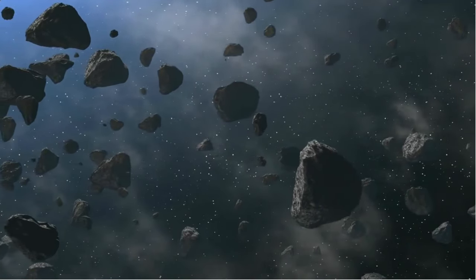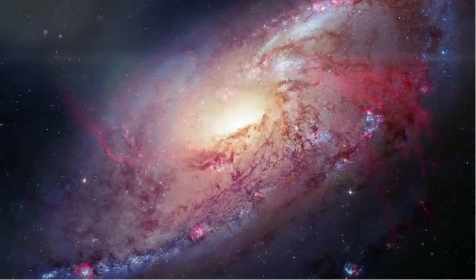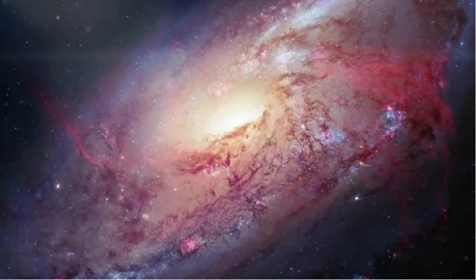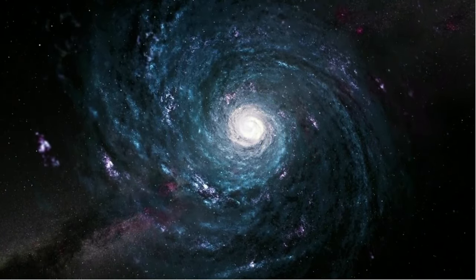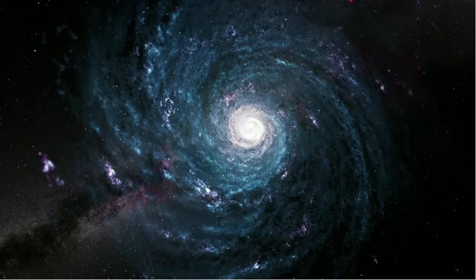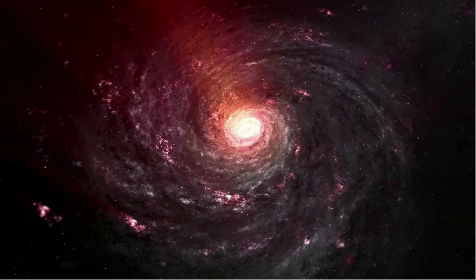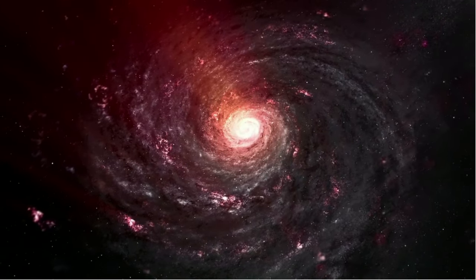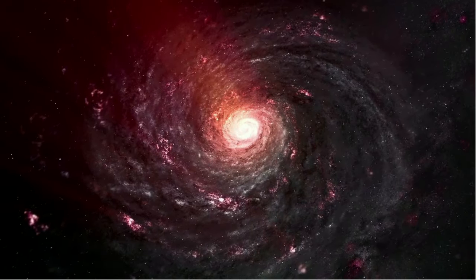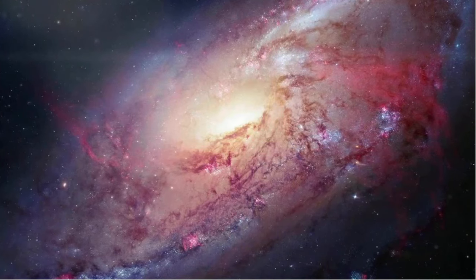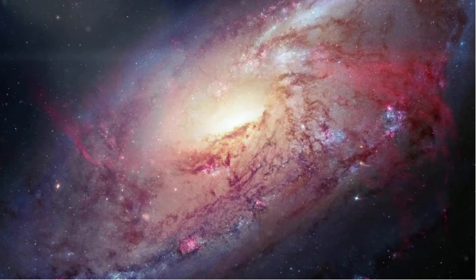A galaxy is larger than a solar system and it is a gravitationally bound collection of stars along with their planets, gas, dust, and dark matter. There are at least three main types of galaxies: elliptical, spiral, and irregular. Galaxies are huge and range in size from dwarfs with just a few hundred million stars to giants with 100 trillion stars, each orbiting its galaxy's center of mass.